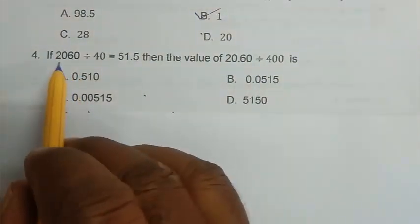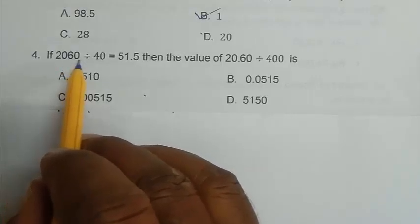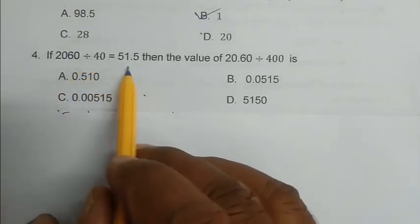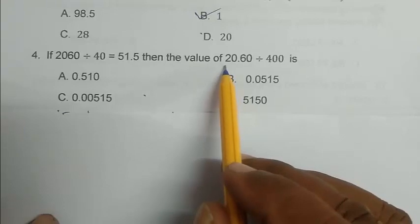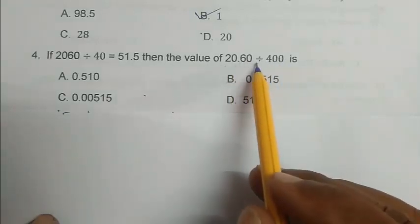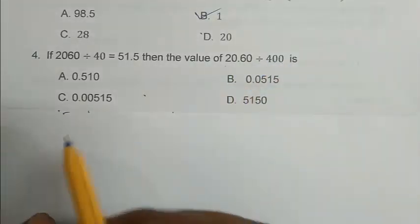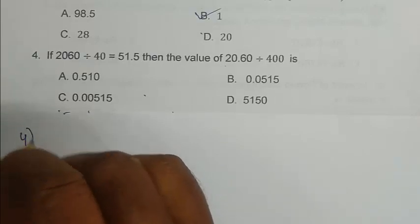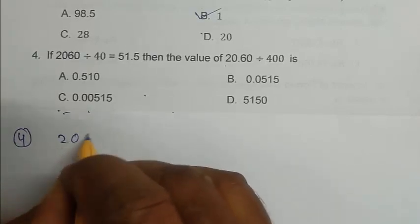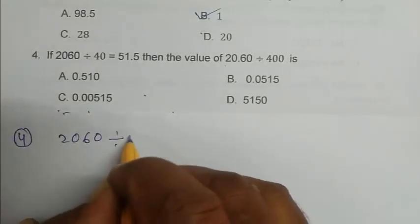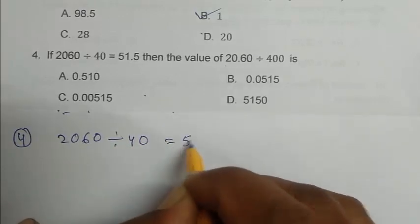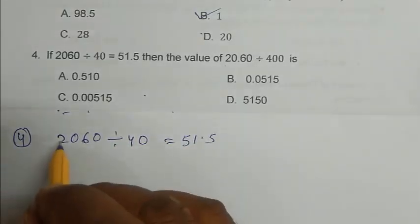Question number 4. 2060 divided by 40 equal to 51.5. Then the value of 20.60 divided by 400 is. So question number 4, 2060 divided by 40 that is 51.5.